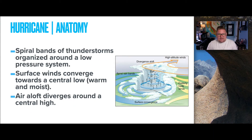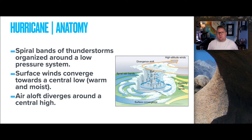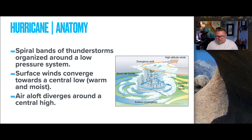Looking at the anatomy of a storm from a bird's-eye view, spiral bands of thunderstorms are organized around a low-pressure system. Surface winds converge towards a central low, which is warm and moist compared to surrounding air. The air aloft diverges around a central high — once air reaches the top of the storm, it blows away and diverges. The spiral rain bands spin counterclockwise as a low-pressure system.